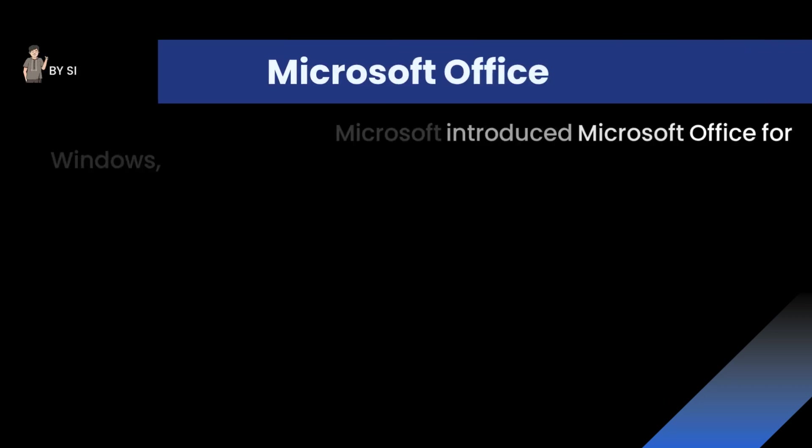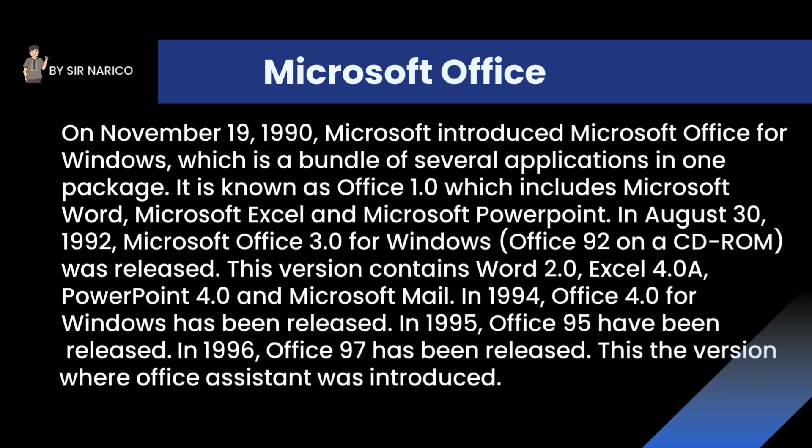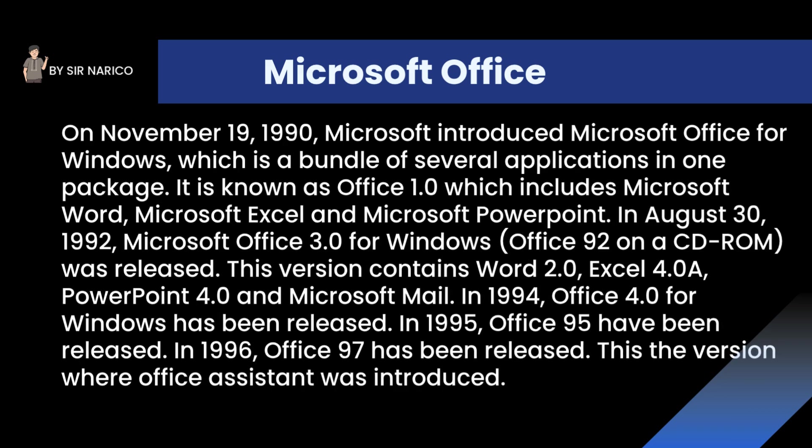On November 19, 1990, Microsoft introduced Microsoft Office for Windows — a bundle of several applications in one package. It was known as Office 1.0, which included Microsoft Word, Microsoft Excel, and Microsoft PowerPoint. On August 30, 1992, Microsoft Office 3.0 for Windows was released, containing Word 2.0, Excel 4.0a, PowerPoint 4.0, and Microsoft Mail.